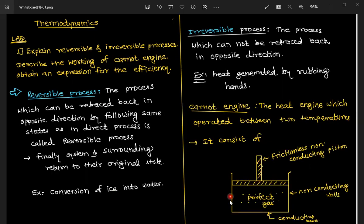I have drawn a diagram showing a piston inside a container. It has a frictionless non-conducting piston, non-conducting walls, a conducting base, and a perfect gas fitted inside it. This is the Carnot engine.